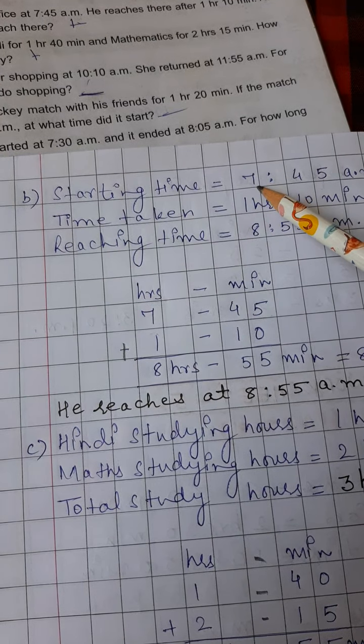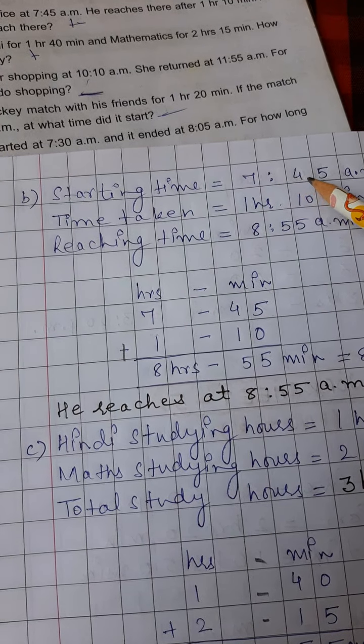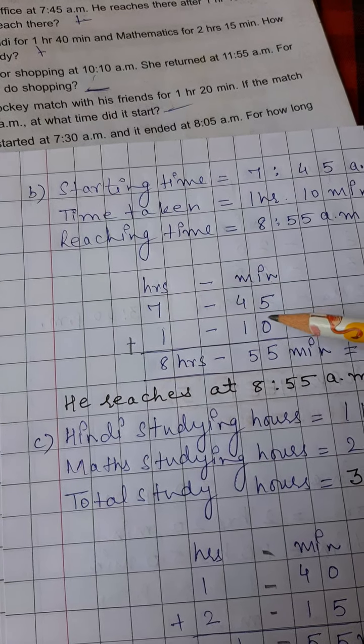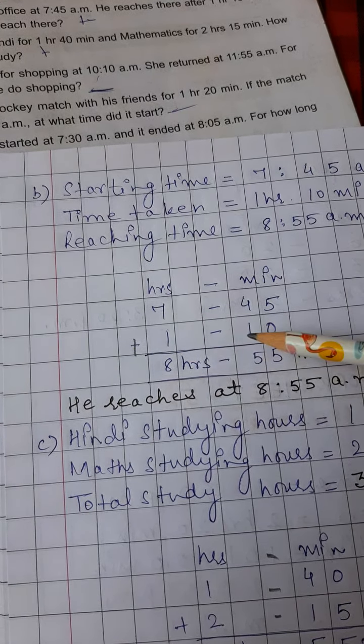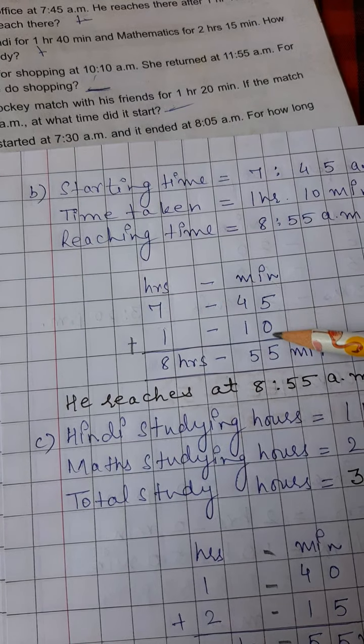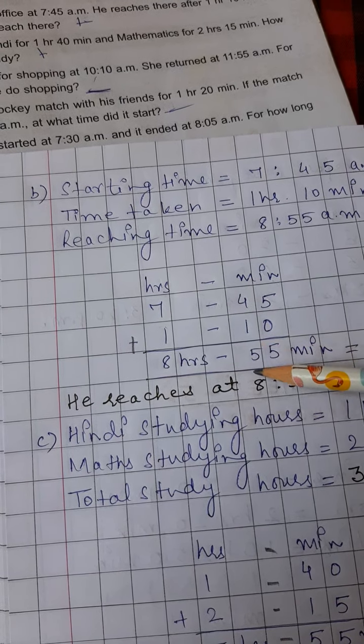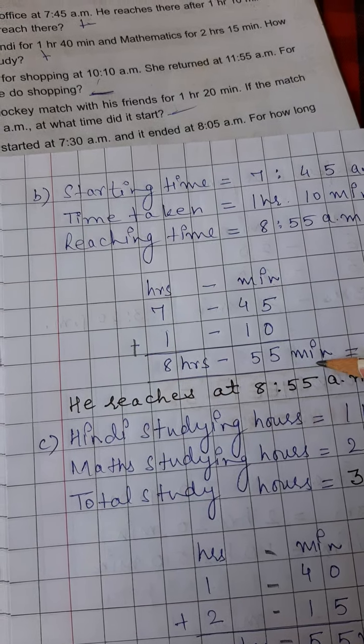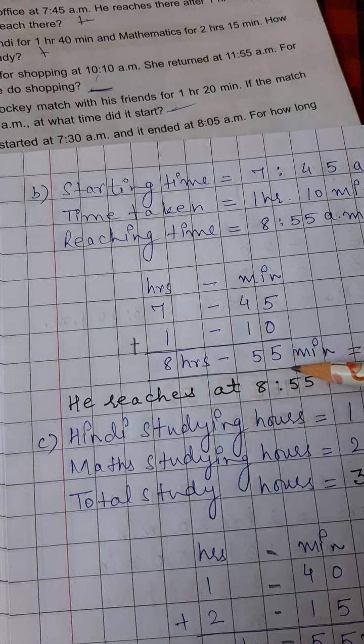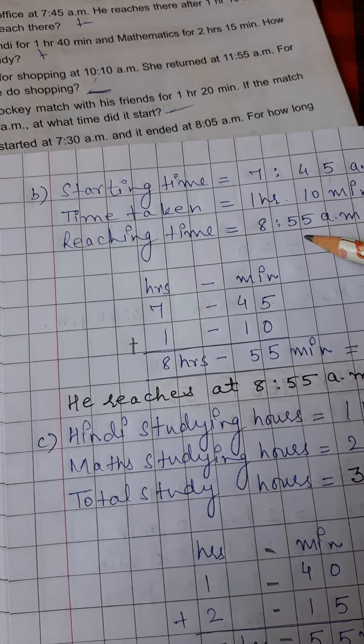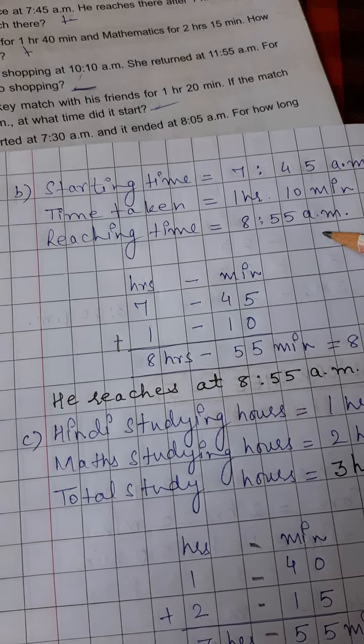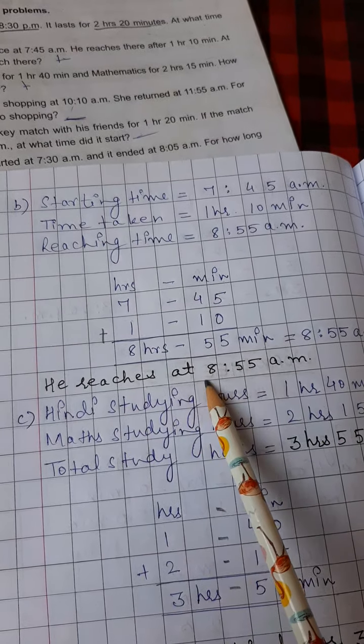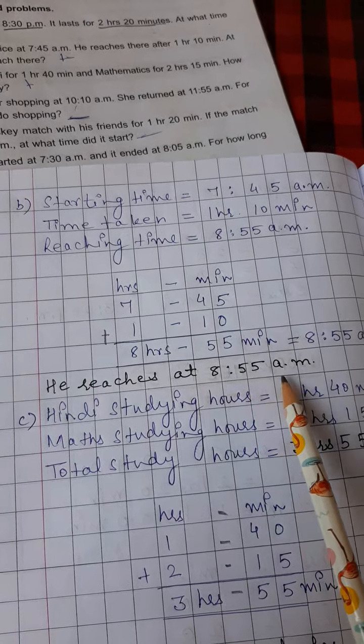So make 2 columns, write 7 here and 45 like this, 1 in hours column, 10 in minutes column. Now 5 plus 0 is 5, 4 plus 1 is 5, 7 plus 1 is 8. So 8 hours, 55 minutes. That means 8.55am is the reaching time. So write 8.55 here and in the last, you can write the statement like this also. He reaches at 8.55am.